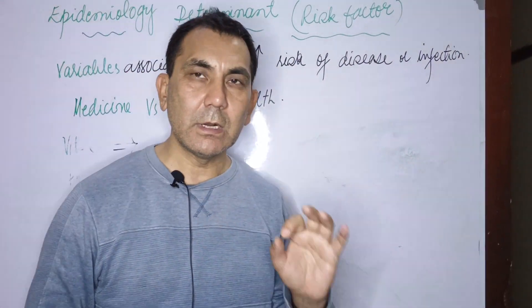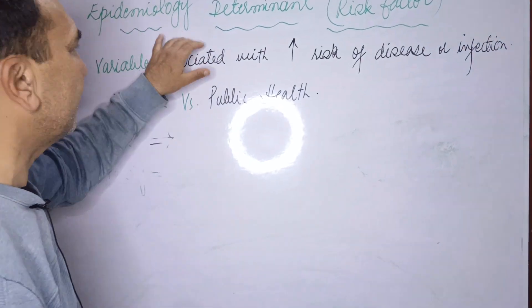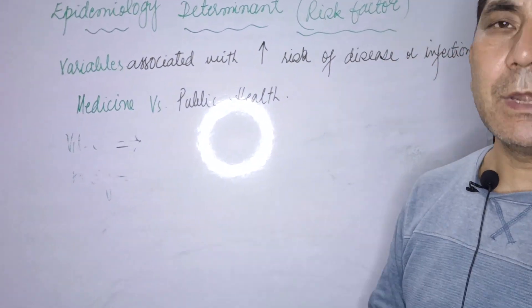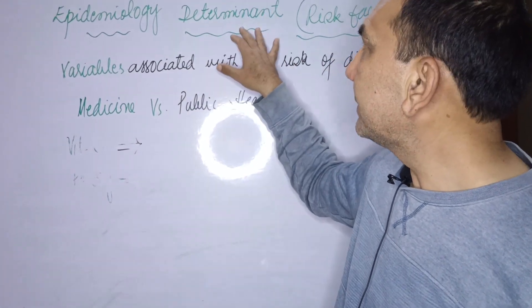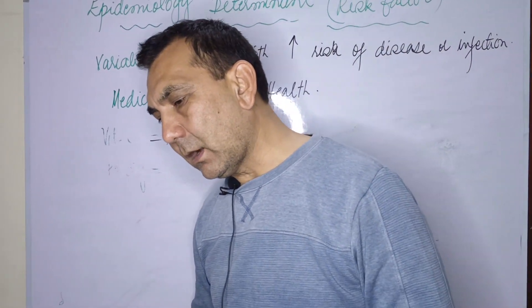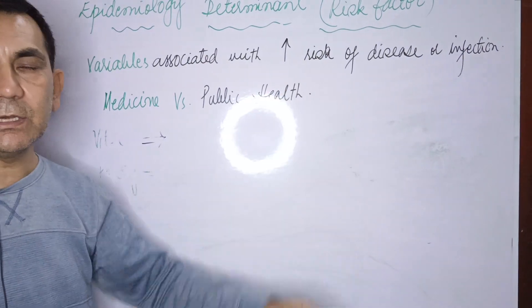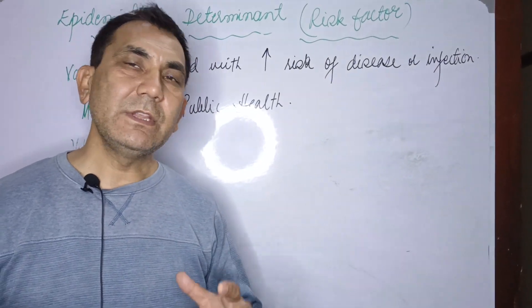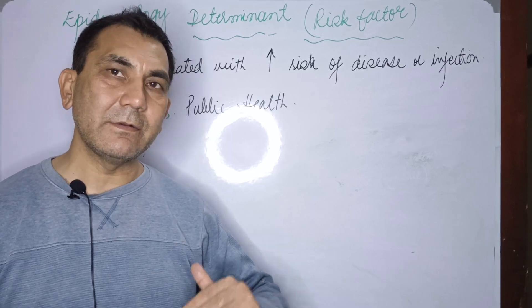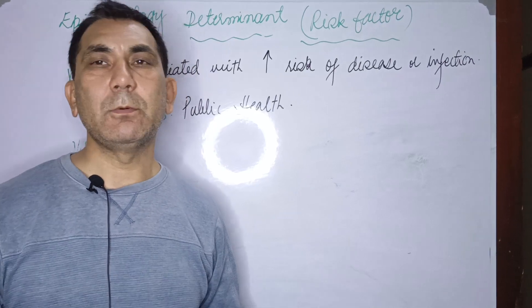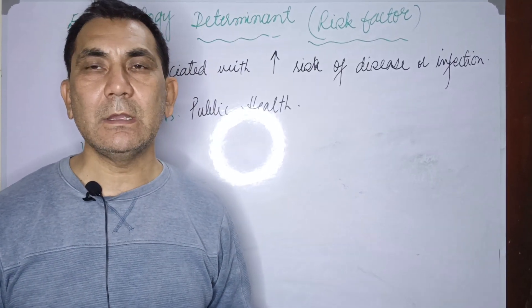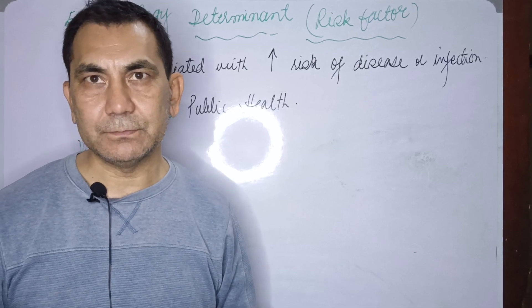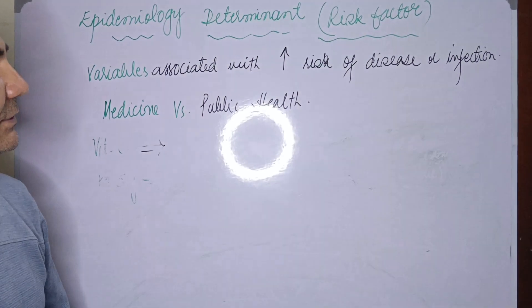In today's lecture we will learn about the determinants of disease. The determinants, or risk factors, are the independent variables which are associated with an increased risk of disease or infection. If these risk factors increase in any specific population, geographical area, or time period, they increase the risk of disease or infection.